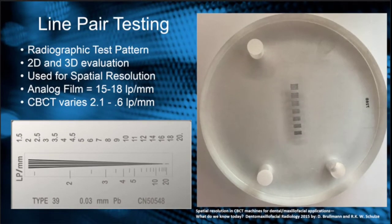It's used for spatial resolution, so the space between the lines. We want to see the detail and how much detail can we get. To try to help understand that, if we look at analog film, it can vary between 15 to 18 individual lines per millimeter—pairs of lines per millimeter. In analog film, we can sometimes see between 15 and 18.